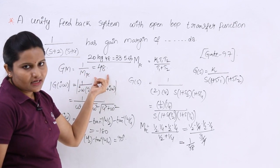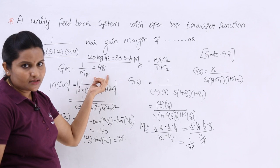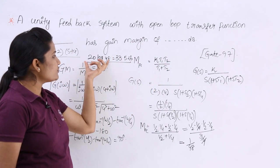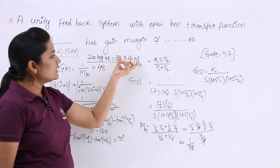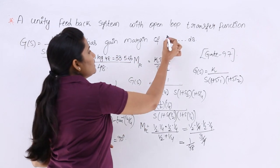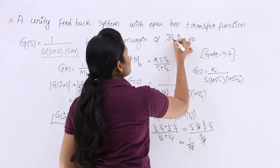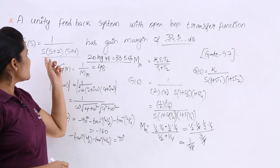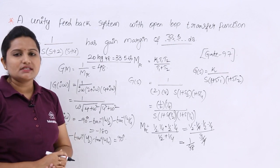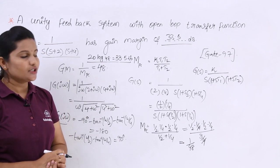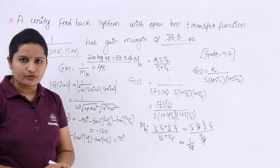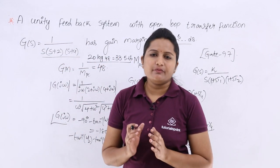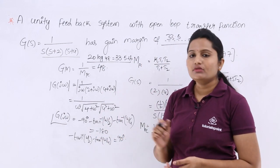If the question asks for direct gain margin, the answer is 48. If they ask in terms of decibels, take 20·log of the gain margin to get approximately 33.5 dB. This is the gain margin for G(s) = 1 divided by s(s+2)(s+4). Using this method, we can solve any type of GATE problem related to gain margin.